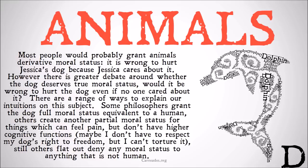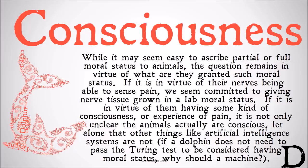It might seem easy to ascribe partial or full moral status to animals. The question is going to remain: in virtue of what are they granted such moral status? If it is in virtue of their nerves being able to sense pain, we seem committed to giving nerve tissue grown in a lab moral status. If it is in virtue of them having some kind of consciousness or the experience of pain, it's not only unclear that animals are actually conscious — let alone other humans being conscious — but it seems like if we're not sure that other humans are conscious, we certainly can't be sure that animals are conscious.